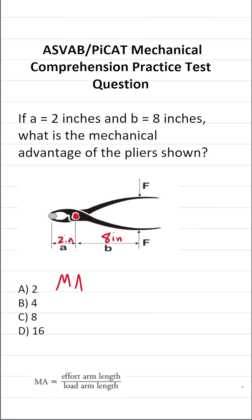And to calculate the mechanical advantage of this set of pliers, we're going to take the effort arm length. So here's where you actually squeeze these pliers, and we can see that that is 8 inches away from the fulcrum here.